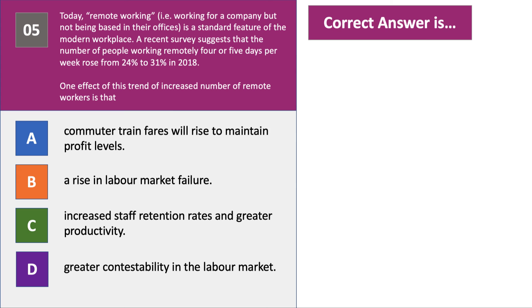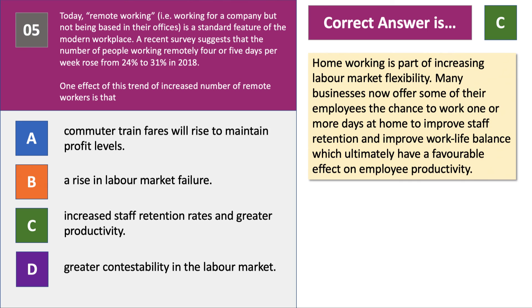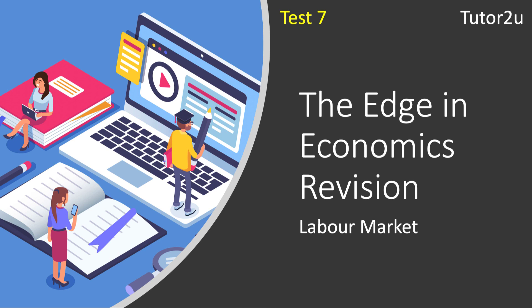The correct answer is C — improved staff retention rates and greater productivity. Home working is now a key part of a flexible labour force. A lot of businesses now offer some employees the chance to work at least one or more days at home each week. That helps to improve staff retention, reduces commuting time, and should help improve work-life balance, which ultimately has a favourable effect on staff retention — people don't leave as often — and also on productivity. So the answer to question five is C. There we go, five questions on the labour market.